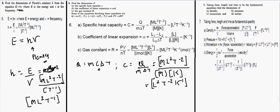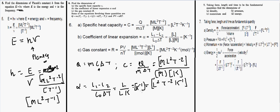For the coefficient of linear expansion, the formula involves (L₁ - L₂)/(L₀ ΔT). Both L₁ - L₂ and L₀ have dimension L, so L cancels. The temperature has dimension K, giving the overall dimension as K⁻¹.